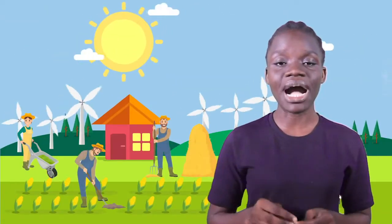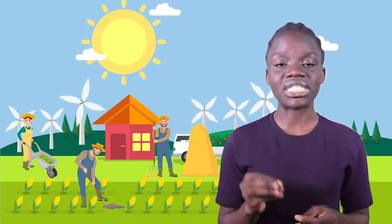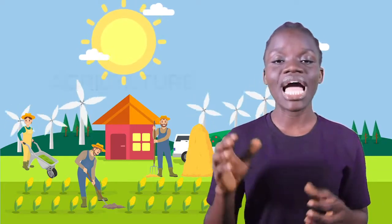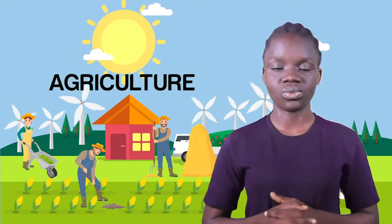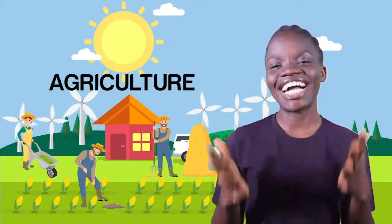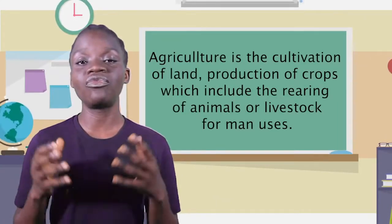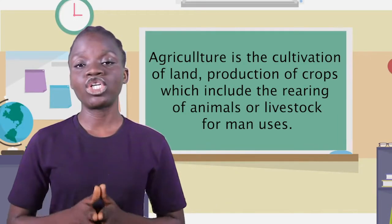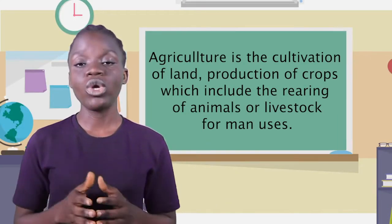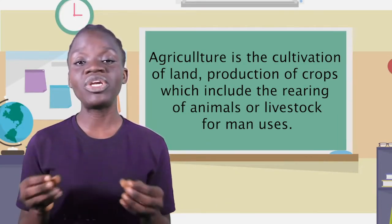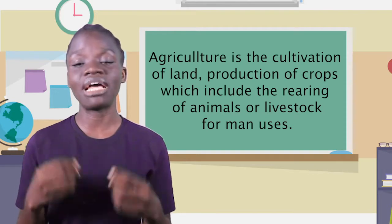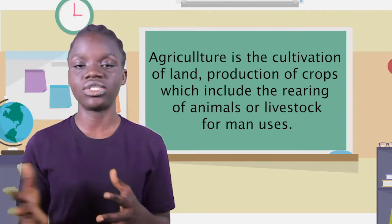So the rice farmer and the poultry farmer are practicing what is known as agriculture. So what is agriculture? Agriculture is the cultivation of land, production of crops, which includes the rearing of animals or livestock for man's use.